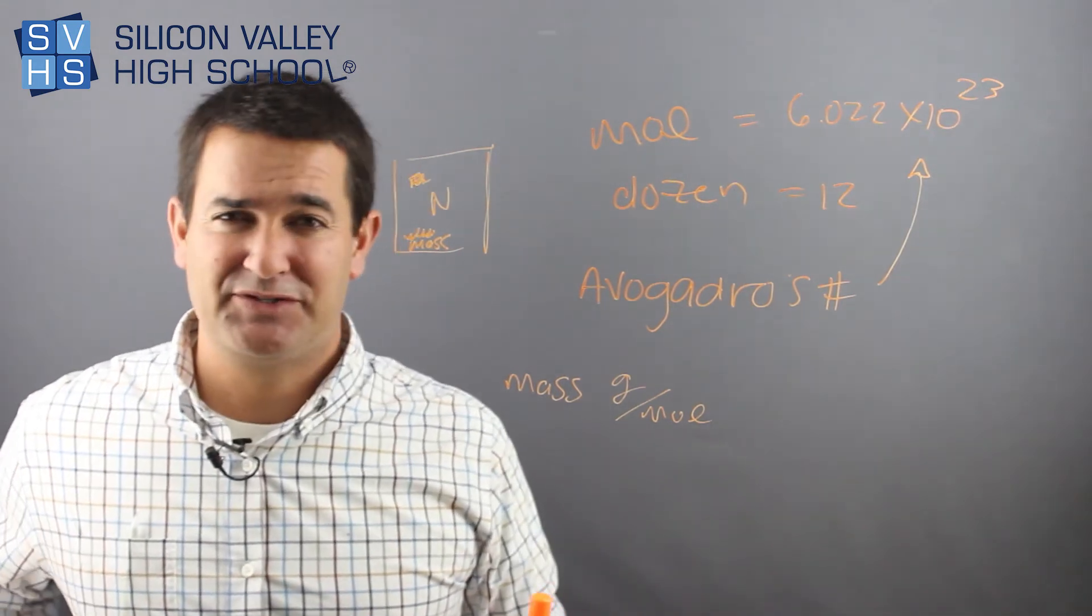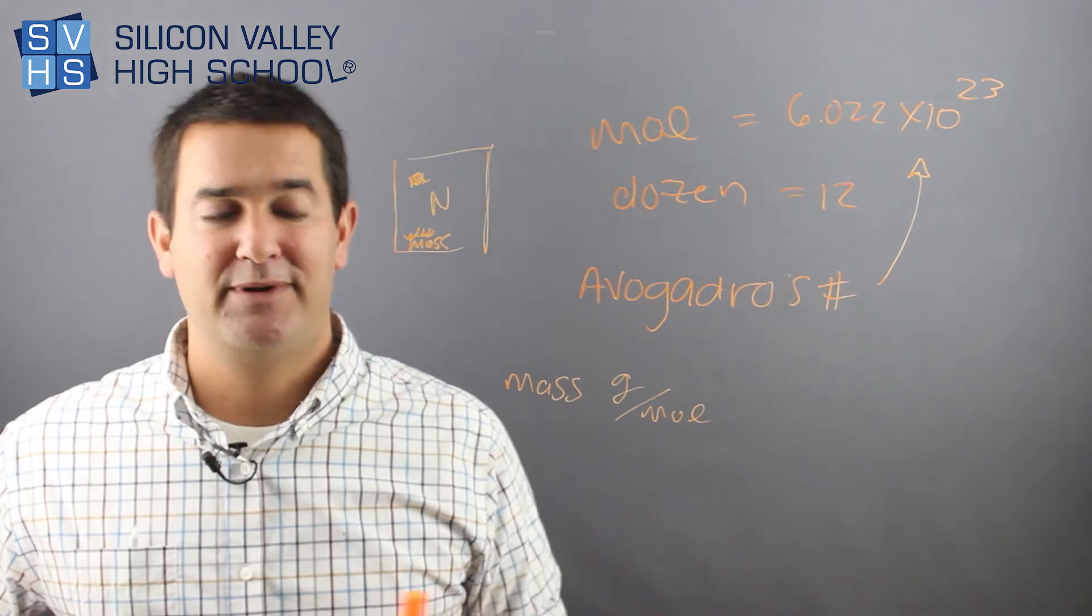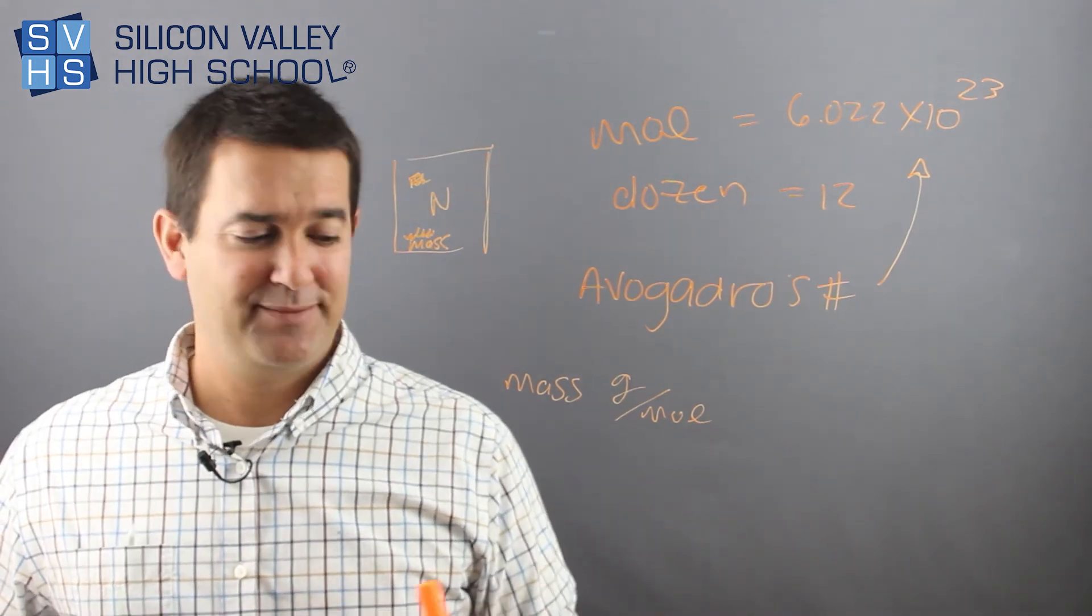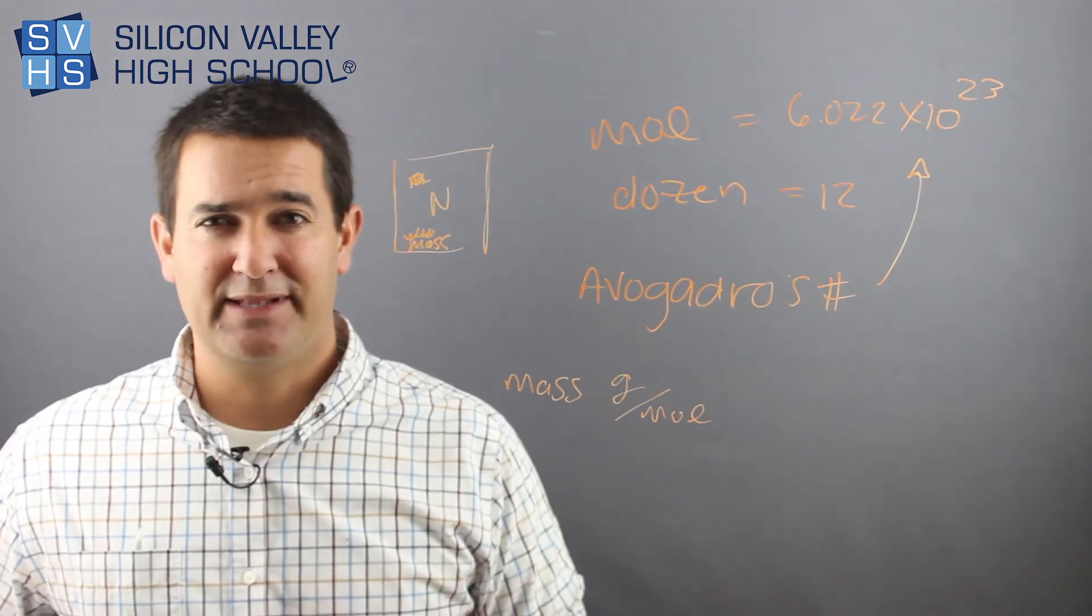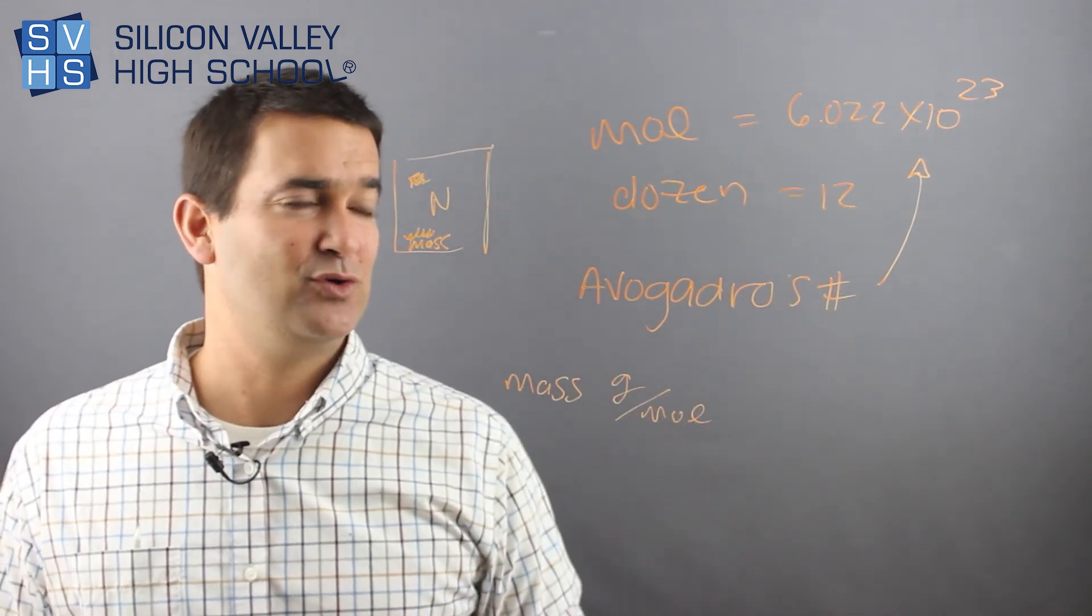But besides that, again, it's because they're so small. It would be terrible to measure them in dozens because there's, you know, how many dozens of nitrogen atoms are there in this little sample? It'd be like infinity. So they just use this bigger number, which is kind of a cooler way to do it.